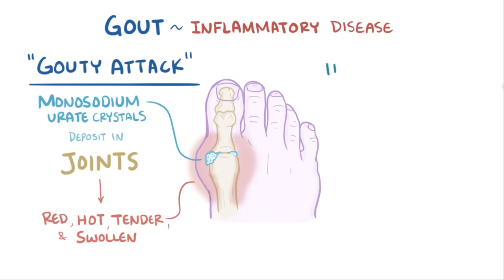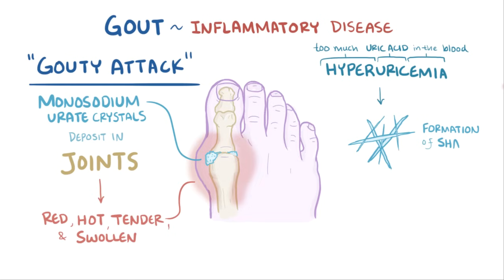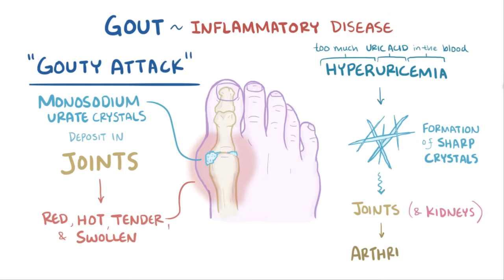The underlying cause of gout is hyperuricemia — too much uric acid in the blood — which results in the formation of sharp, needle-like crystals in areas with slow blood flow like the joints and kidney tubules. Over time, repeated gouty attacks can cause destruction of the joint tissue, which results in arthritis.